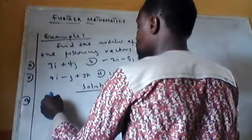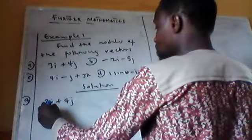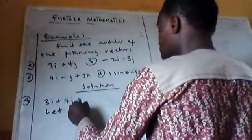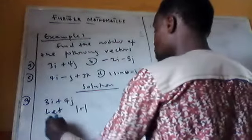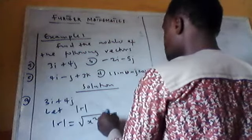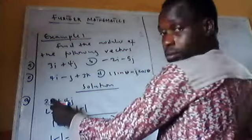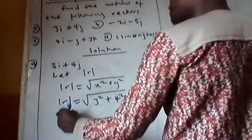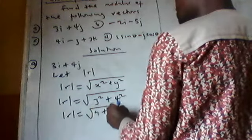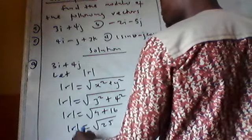Now, find the modulus of the following. Example A: R equals 3I plus 4J. To find the modulus, we use the square root of 3 squared plus 4 squared. Three squared is 9, four squared is 16. So the modulus of R equals the square root of 9 plus 16, which is the square root of 25, which equals 5.